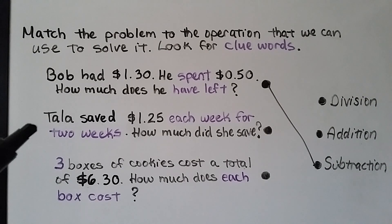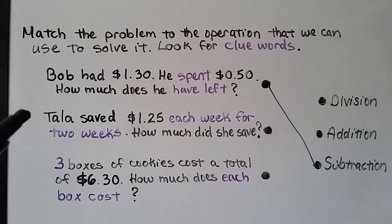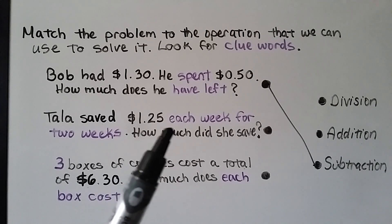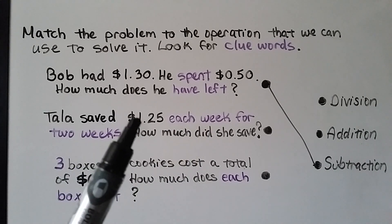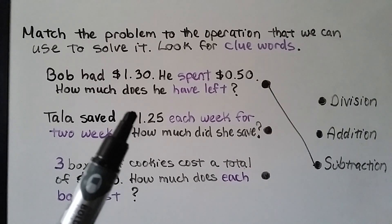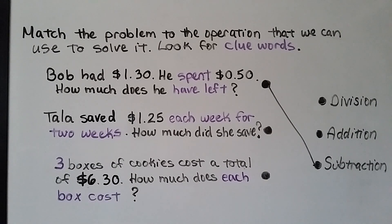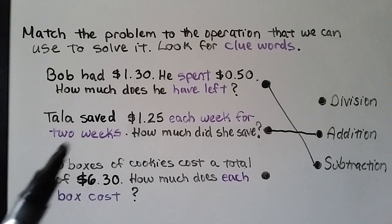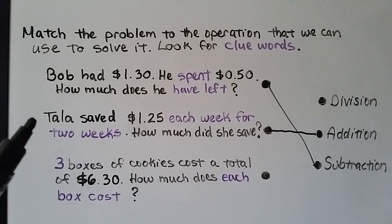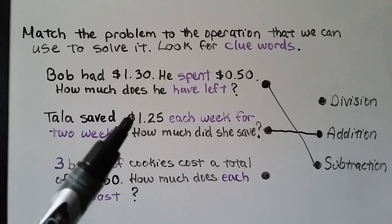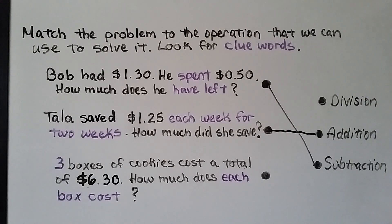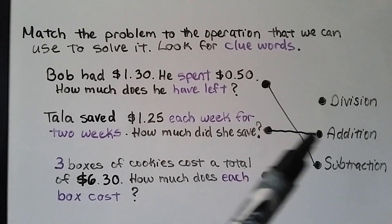The next problem says: Tala saved a dollar and twenty-five cents each week for two weeks — how much did she save? The clue is 'each week for two weeks,' meaning she had two of a dollar twenty-five. The answer is addition: $1.25 + $1.25. This problem can also be solved using multiplication — $1.25 times two — but since we haven't covered multiplying decimals yet, we use addition.